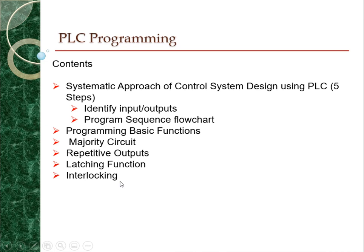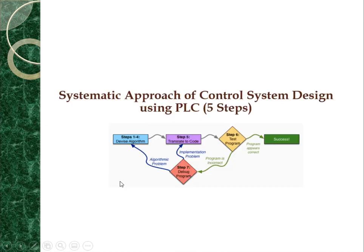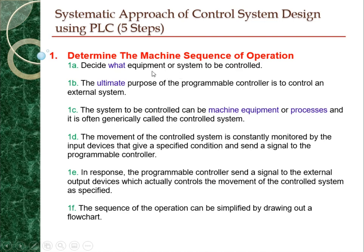Now we look at the systematic approach of control system design using PLC. There are five steps. The first step is to determine the machine sequence of operation. In this step there are a few sub-steps that we need to do before we jump into designing the PLC programming. We will go one by one and see what the steps are.